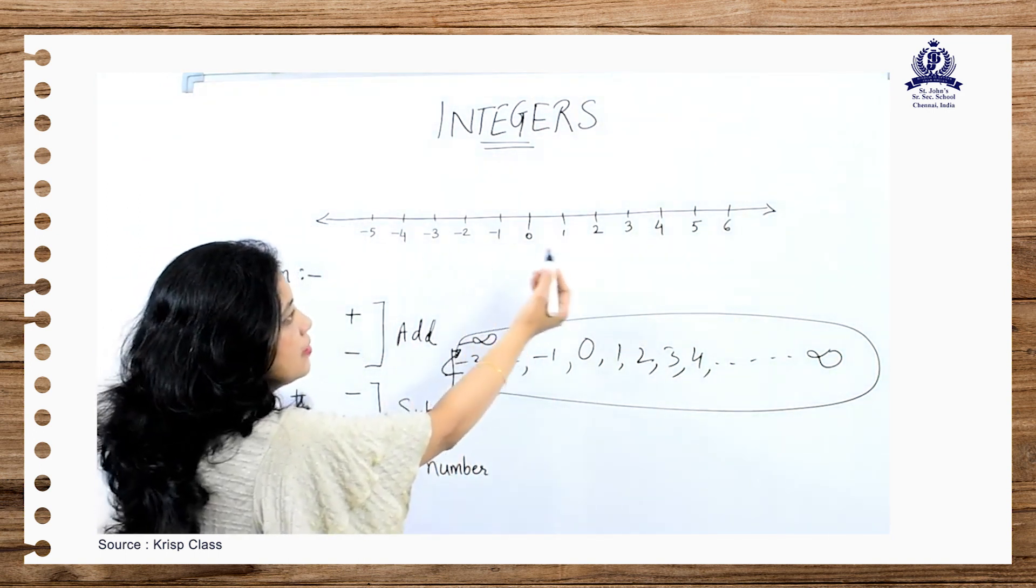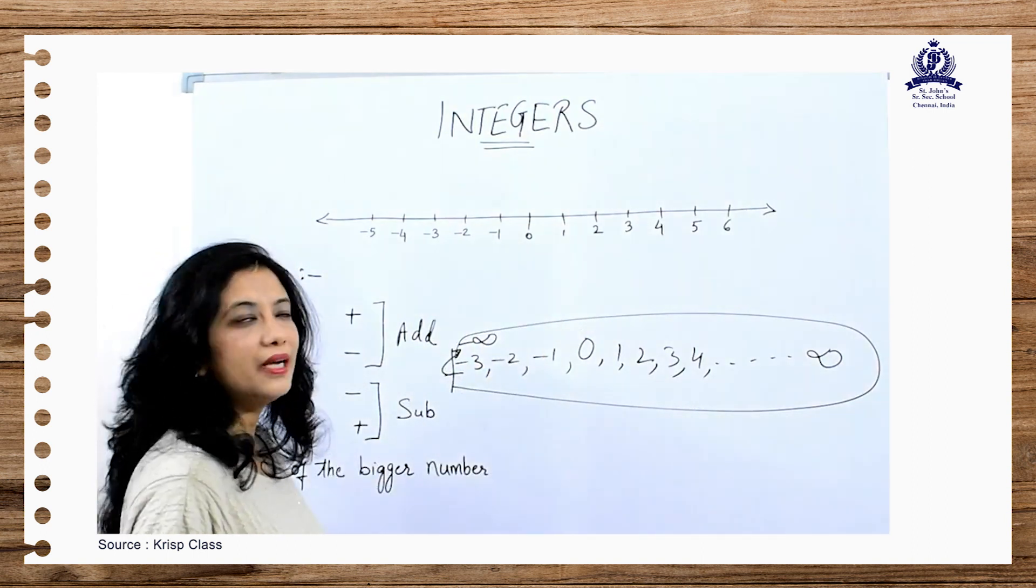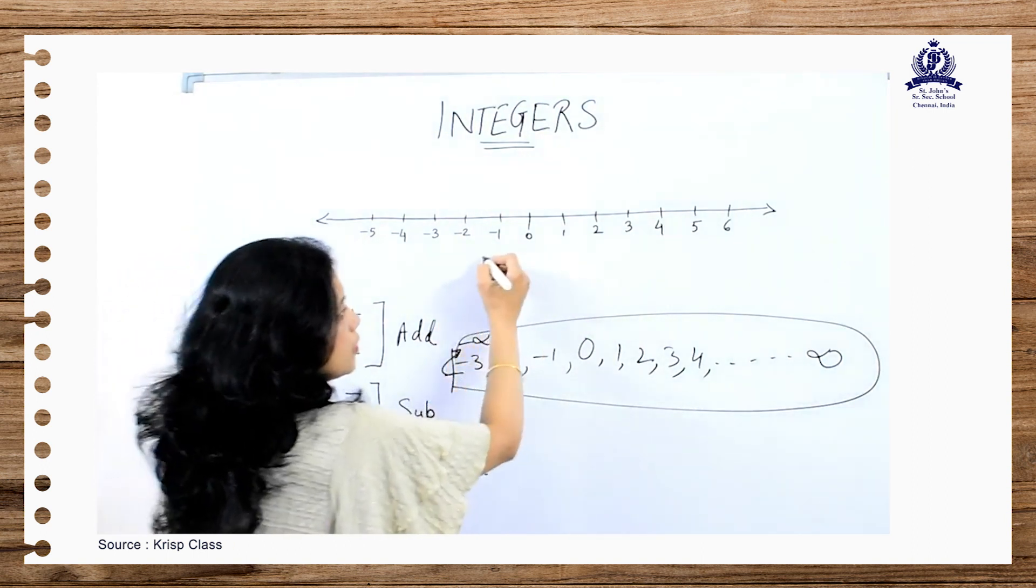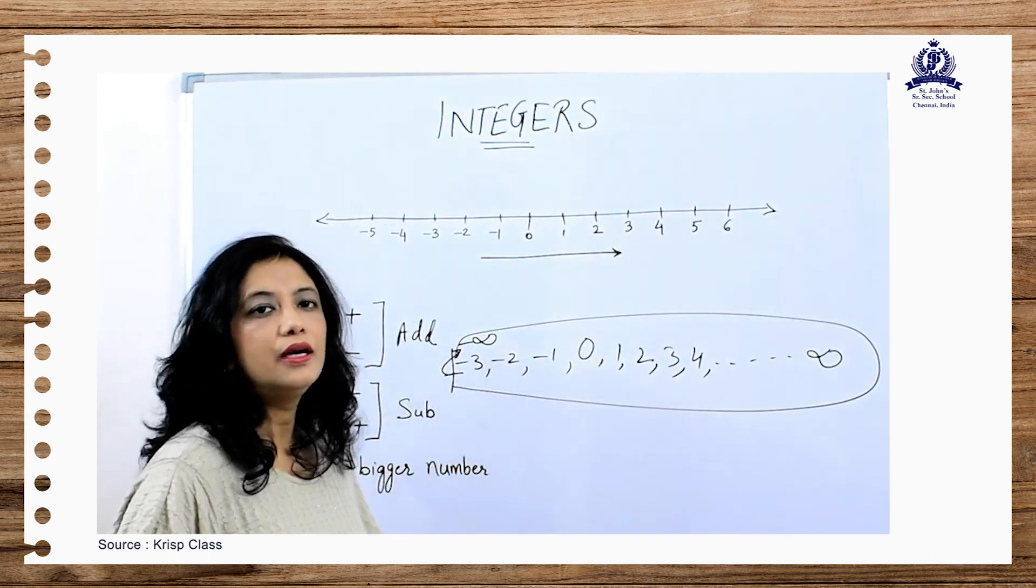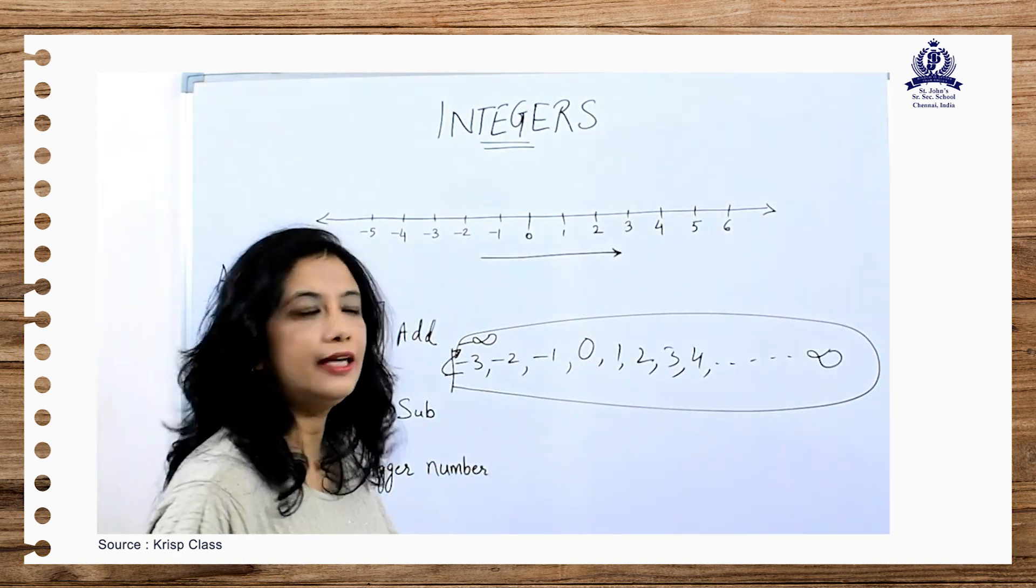Here we have plotted some of the integers on the number line. Now when we move towards the right side on the number line, we get a greater number, the number which is greater in value.